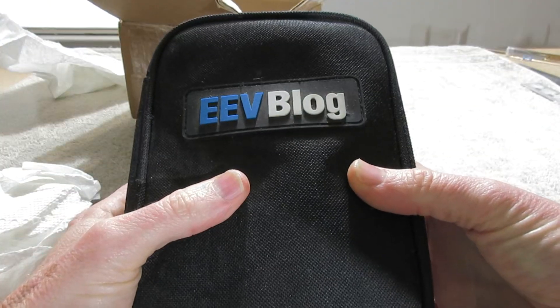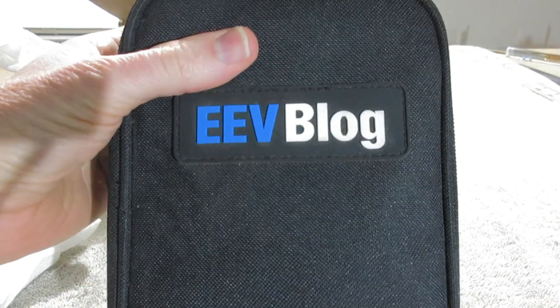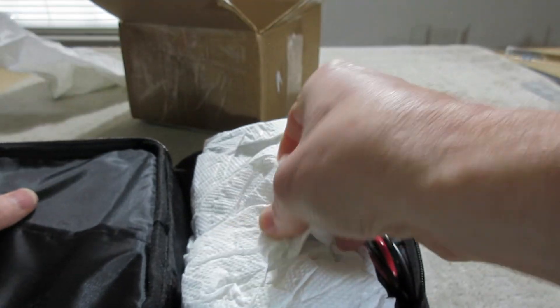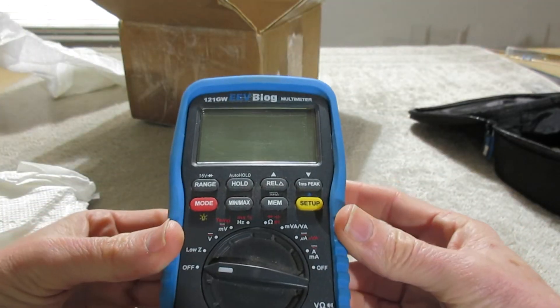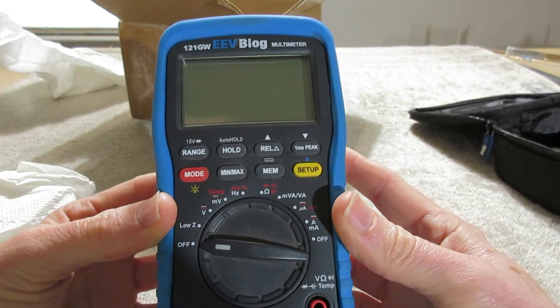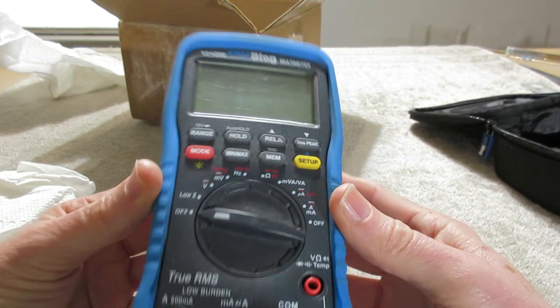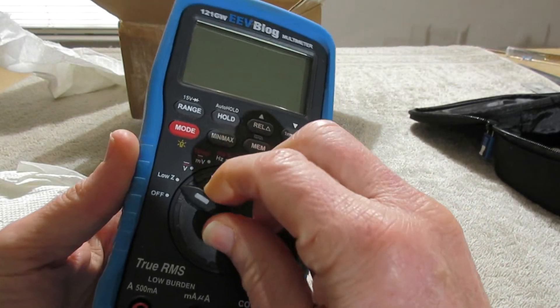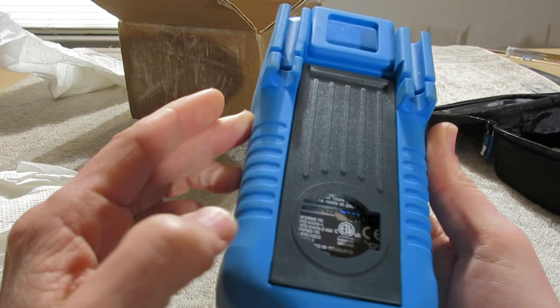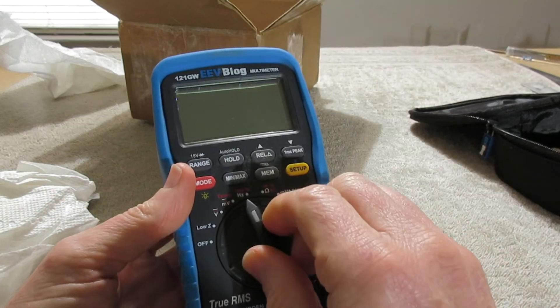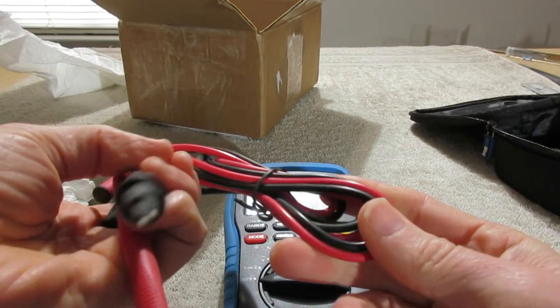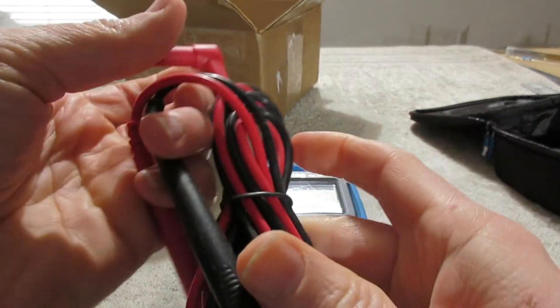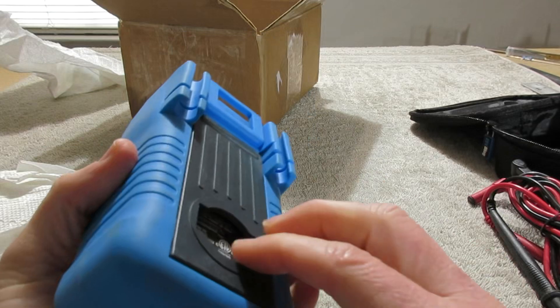Oh, look at that. It's the EEV blog 121 GW multimeter. I guess I need to put batteries in it. Wow, that's pretty cool. It includes some probe leads. I'm not sure if it's the one included with it, but pretty nice.